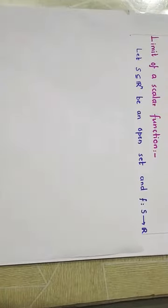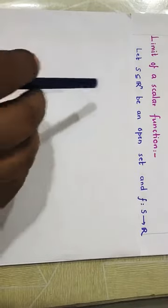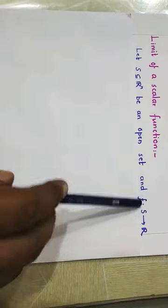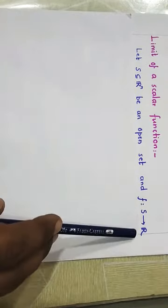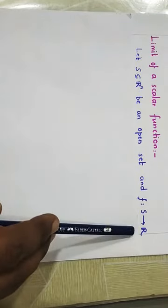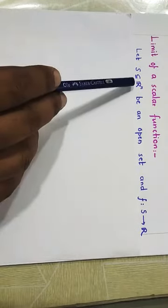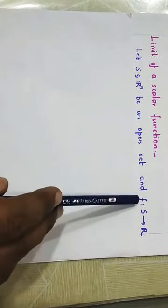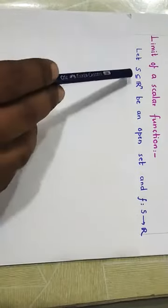Now we are going to define the limit of a scalar function. We have seen the definition of a scalar function and vector function in the previous lecture. A function whose co-domain is R is the scalar function. So if we have S, any open subset of Rn, and F from S to R is any function — a scalar-valued function, because R is the co-domain. And since S is a subset of Rn, F is actually a function from Rn to R, so it is a function of n variables.